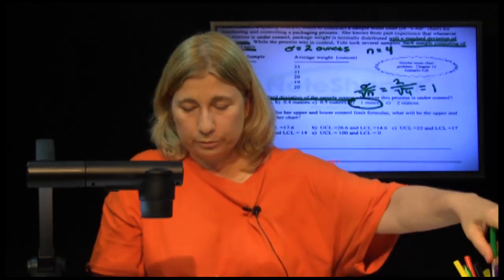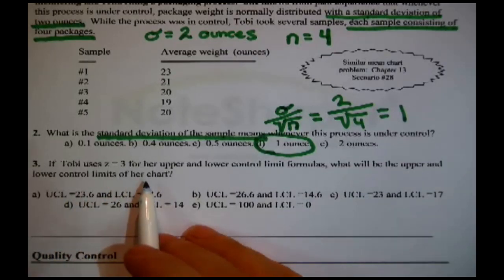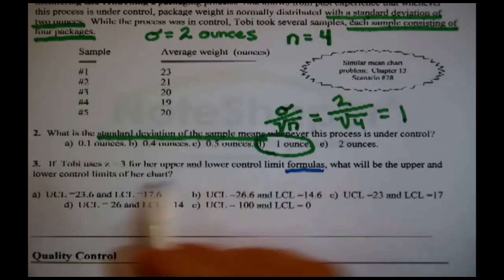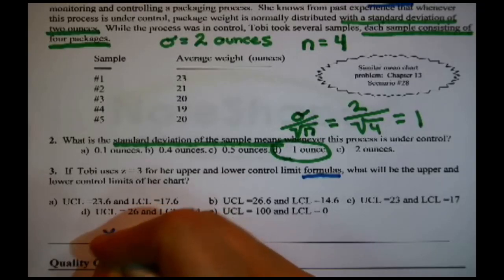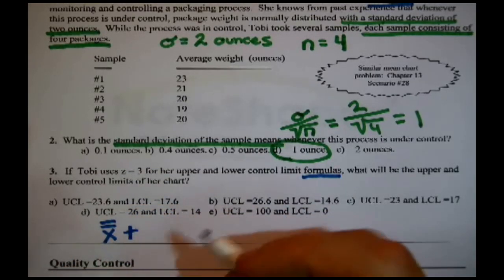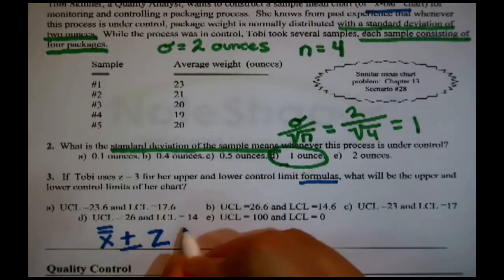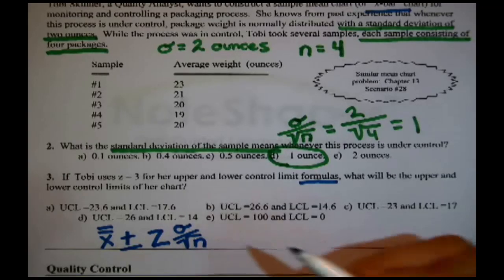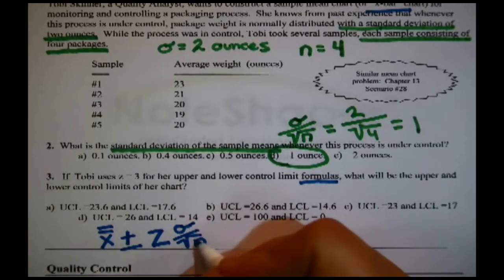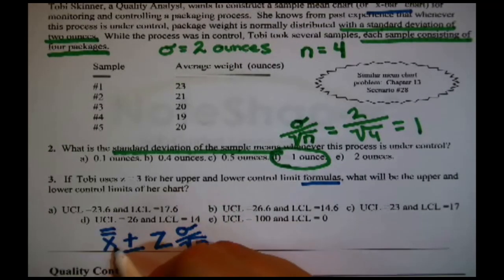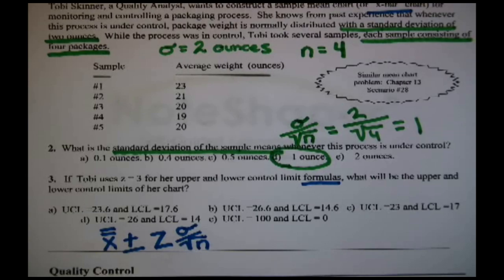What's the next question? If Toby uses Z equals three for her upper and lower control limit formulas, what would be the upper and lower control limits for her chart? It would help to know what the formulas were for the upper and lower control limits of an X bar chart. No problem, that's the kind of thing that would be on a formula sheet. You take X double bar, and you add or you subtract Z times the standard deviation of the sample means, which is the original standard deviation divided by the square root of N.